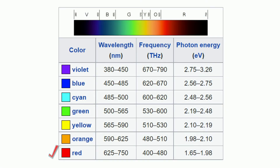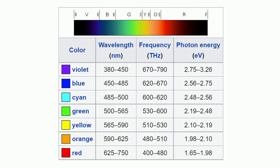Red light has the lowest frequency and photon energy along with the longest wavelength, and violet has the highest frequency and photon energy along with the shortest wavelength. Here is a nice chart summarizing wavelength, frequency, photon energy, and wavelength.